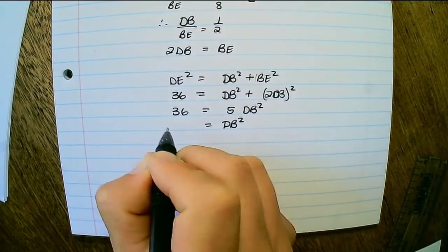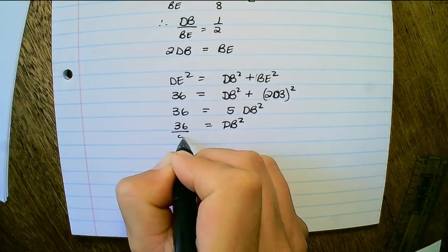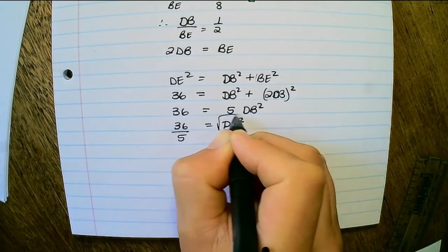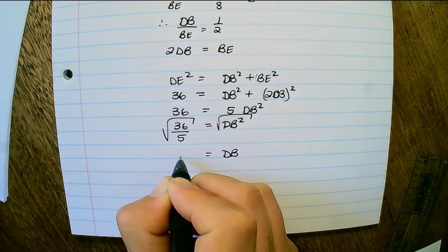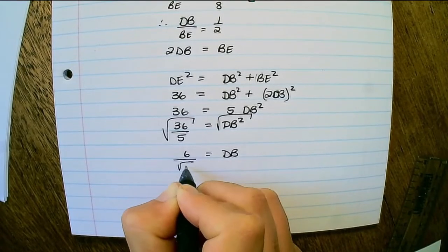Therefore, DB squared is 36 over 5. And if I take the square root on both sides, I have DB is equal to 6 over square root 5.